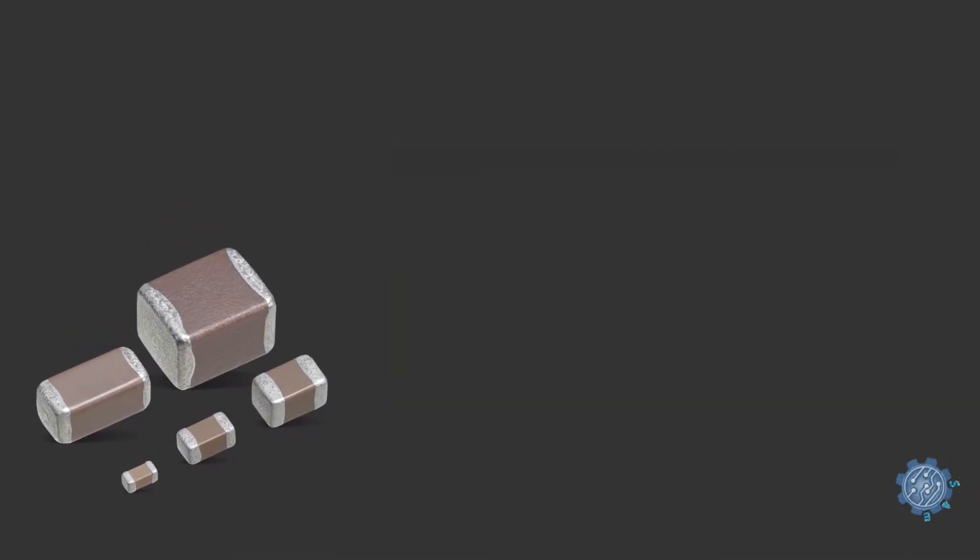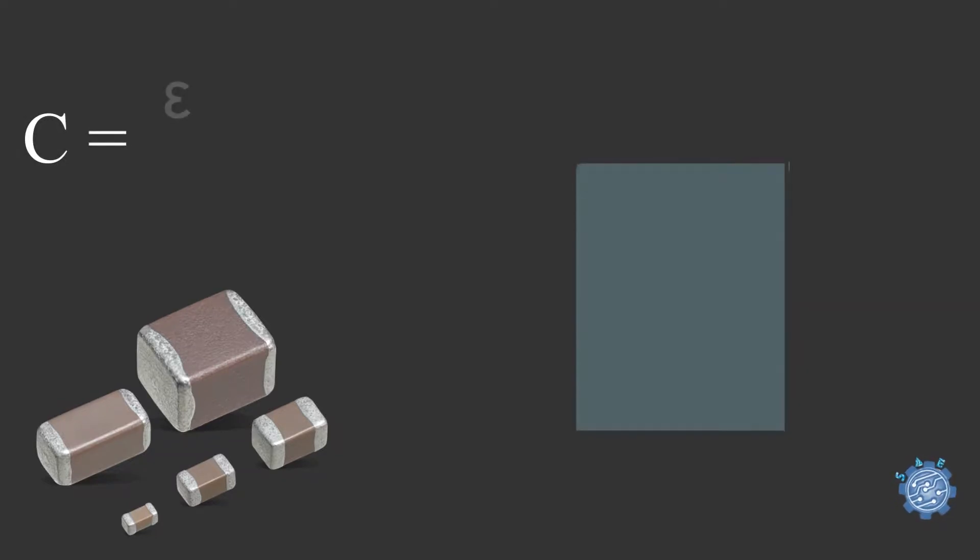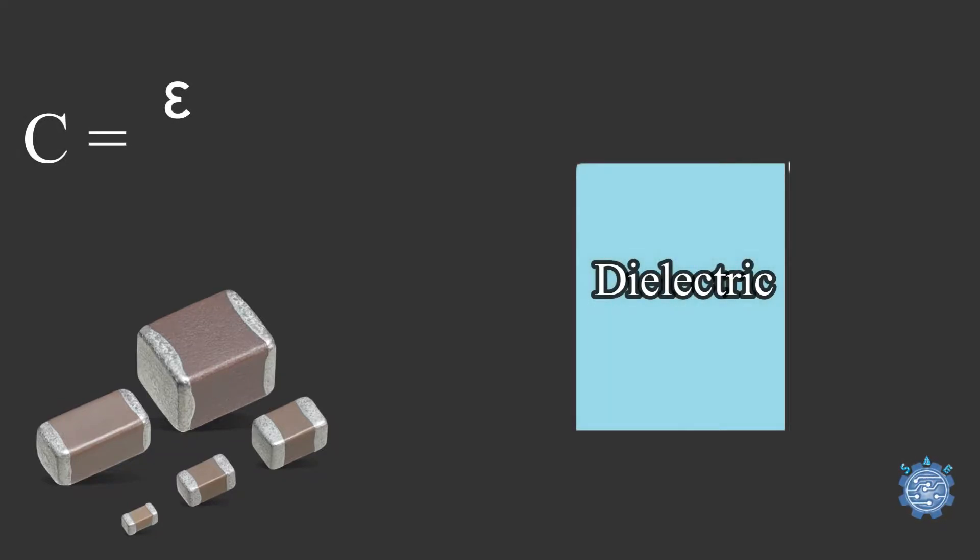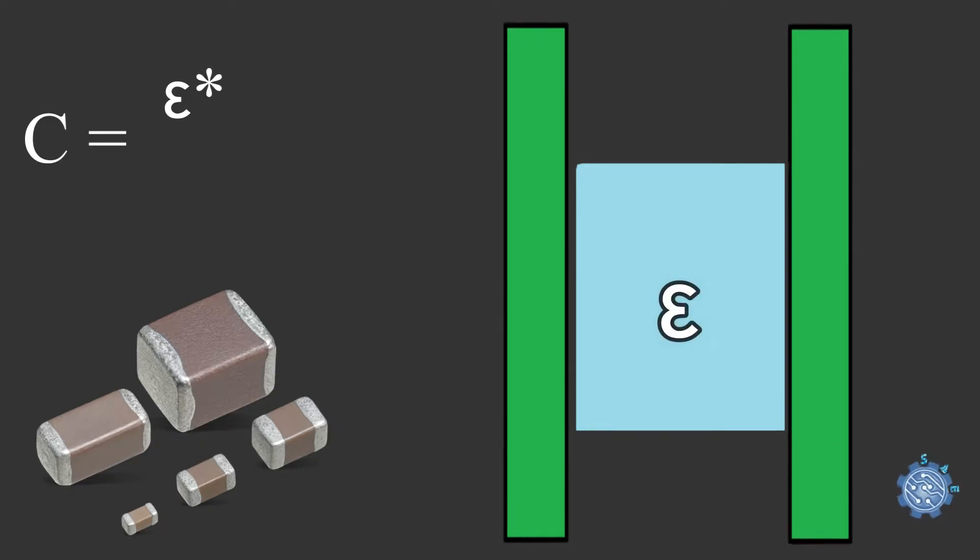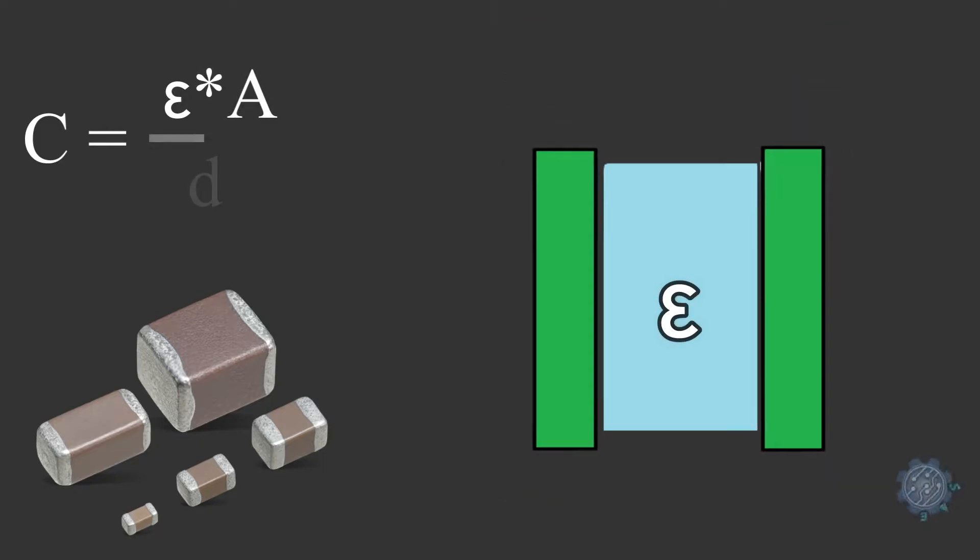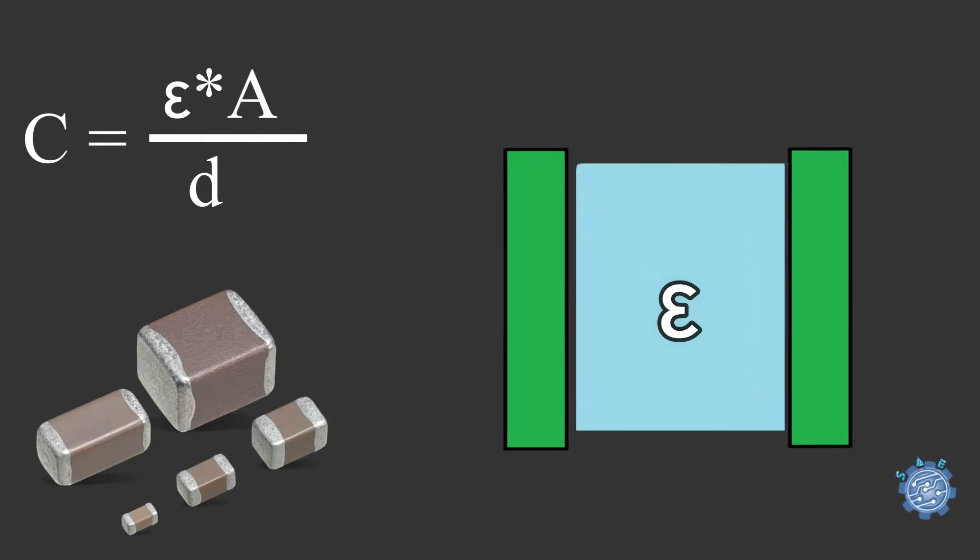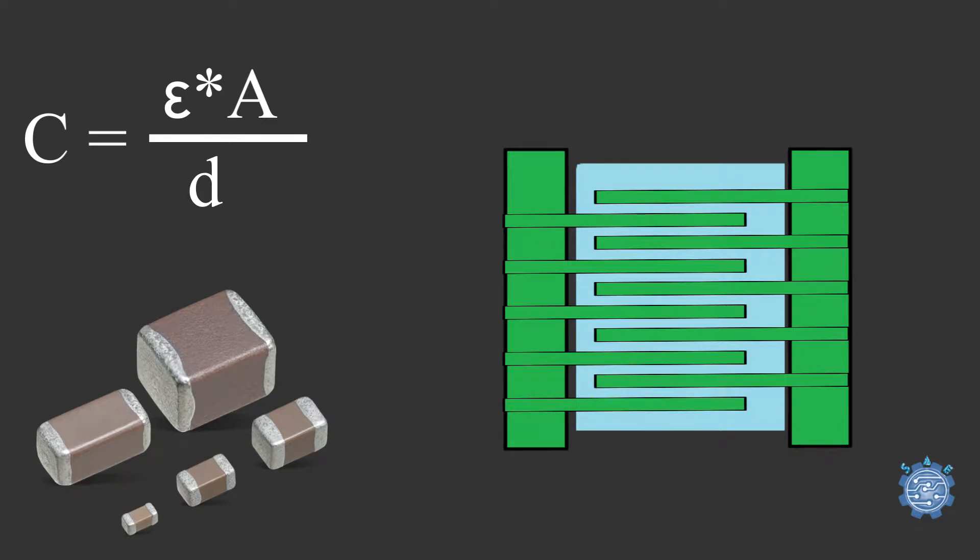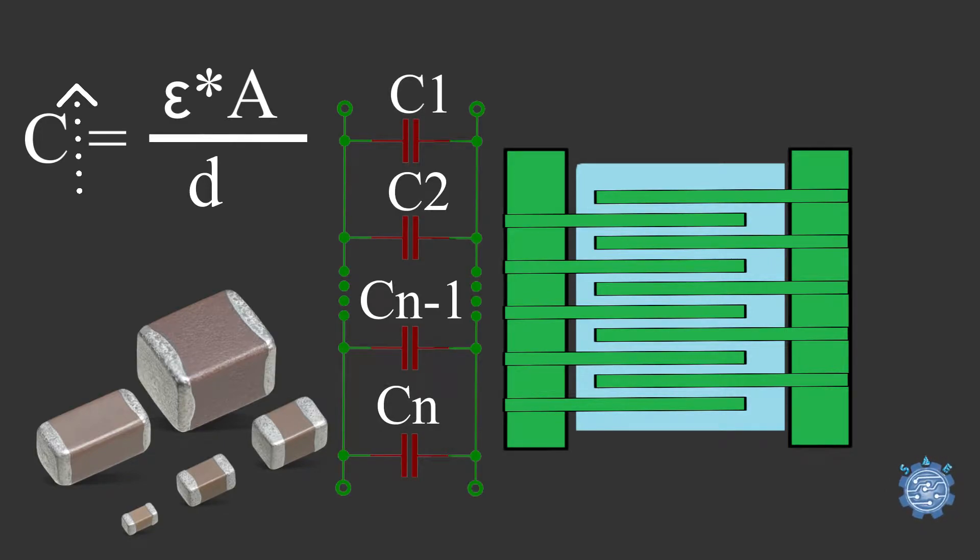As known, capacitance is given by a constant depending on dielectric material, permittivity of dielectric, area of the plate overlap, and distance between plates. Therefore, stacking up more layers of plates between the dielectric will create a bigger capacitance, just like placing in parallel several capacitors—their capacitance is summing up.